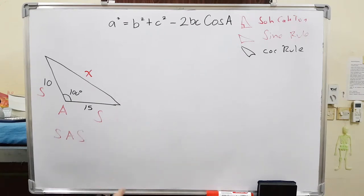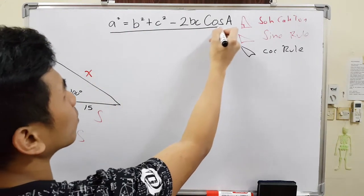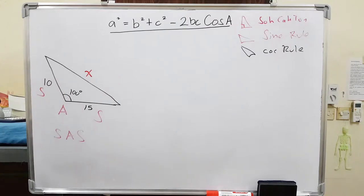So basically, use cosine rule when you have side, angle, side. So, we have a formula here. In some books, there are three formulas, but we can only focus on one formula. They all mean the same thing anyways.